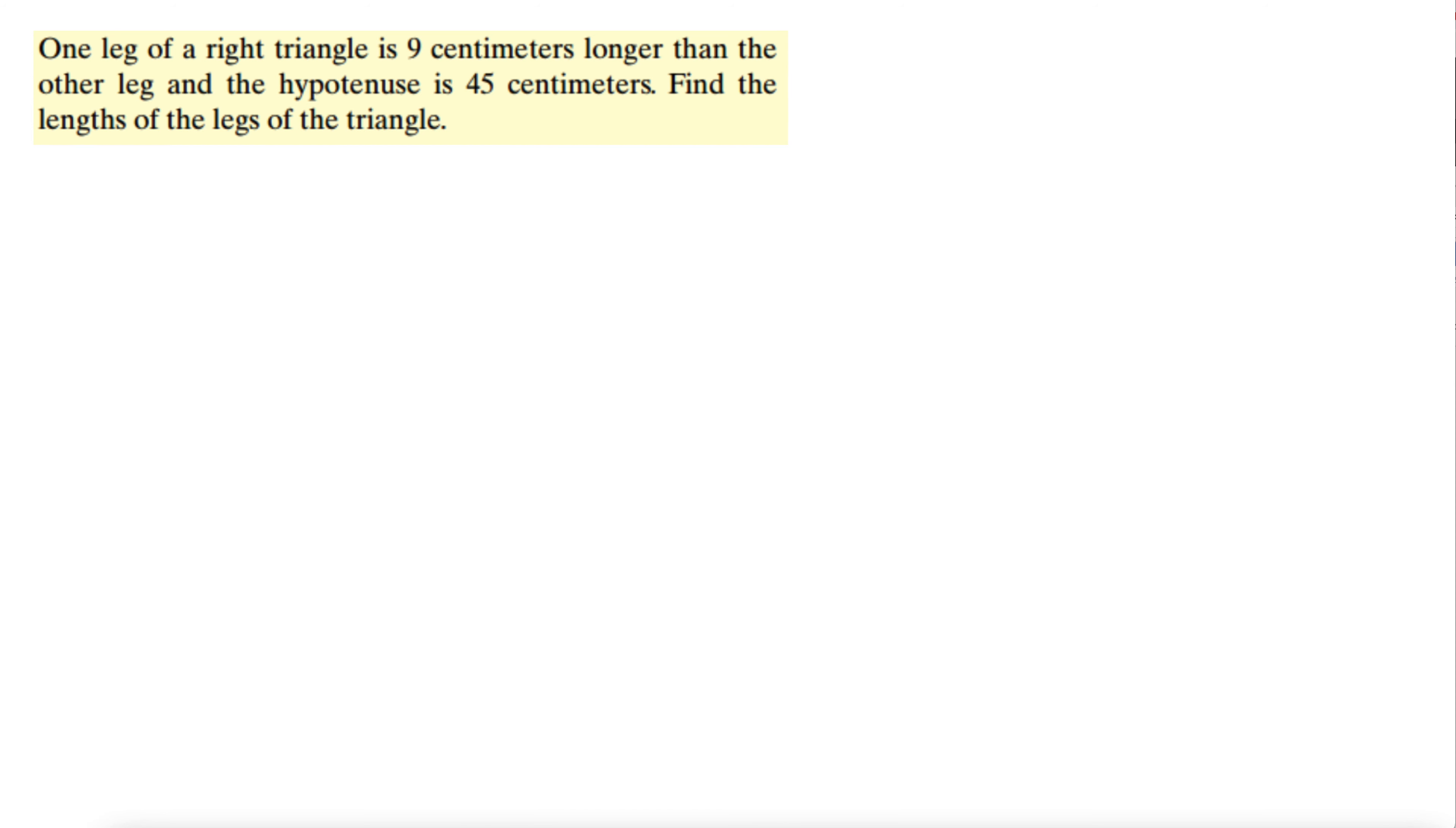We have one leg of a right triangle is nine centimeters longer than the other leg, and the hypotenuse is 45 centimeters. Find the lengths of the legs of the triangle.